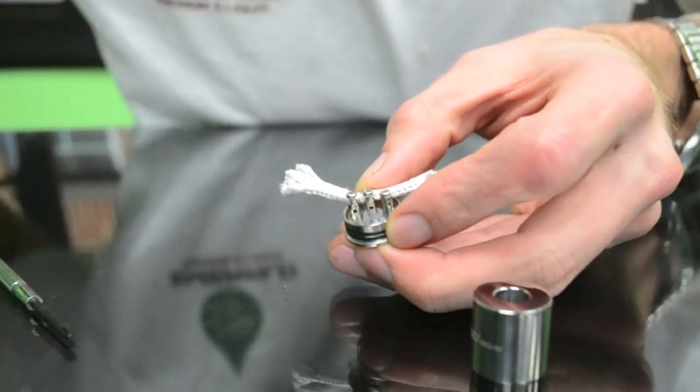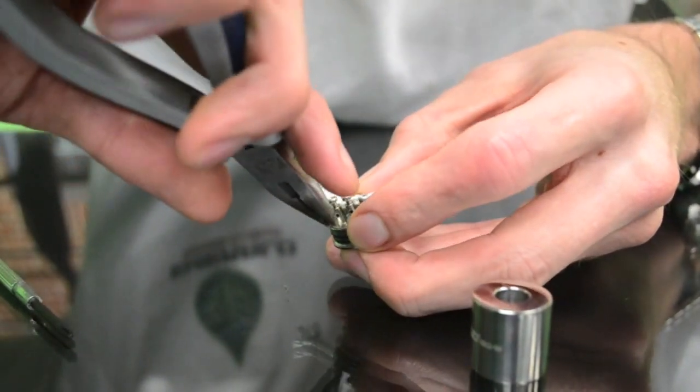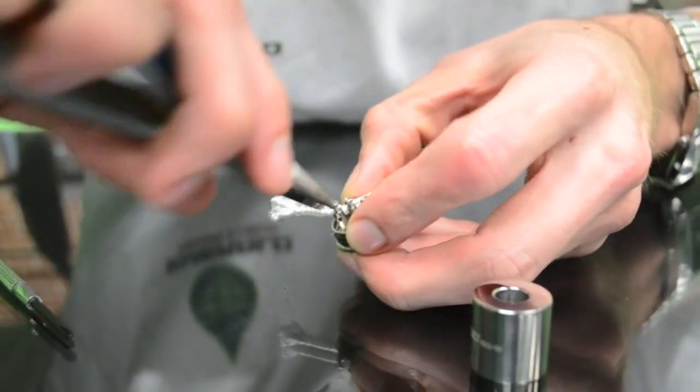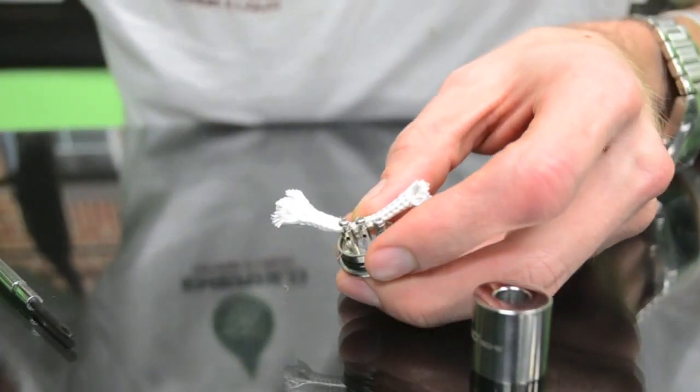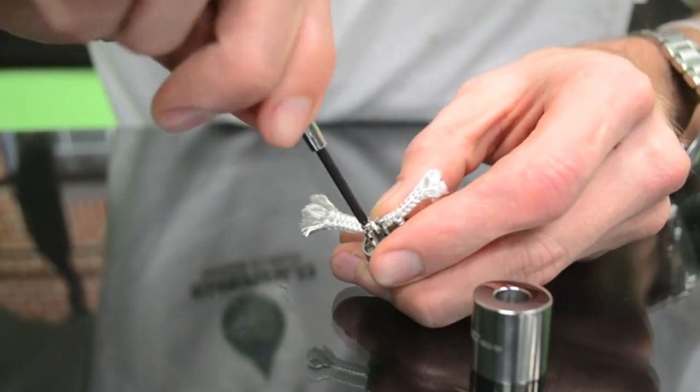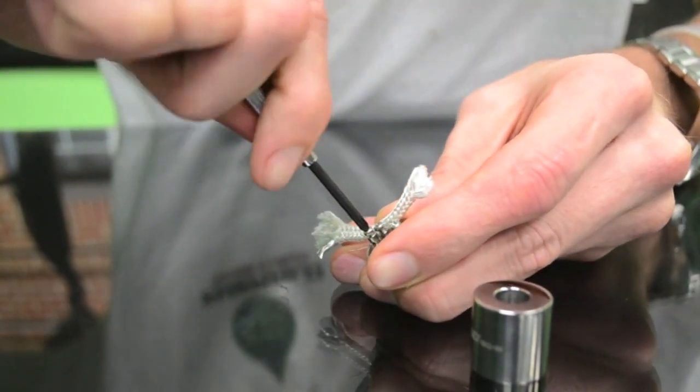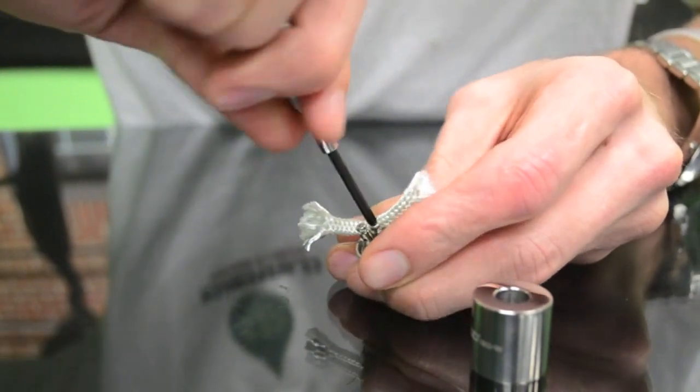Once you have them sticking through or wrapped around, you can tighten it down. You want to tighten the screws as tight as you can, just making sure it has a tight connection there.